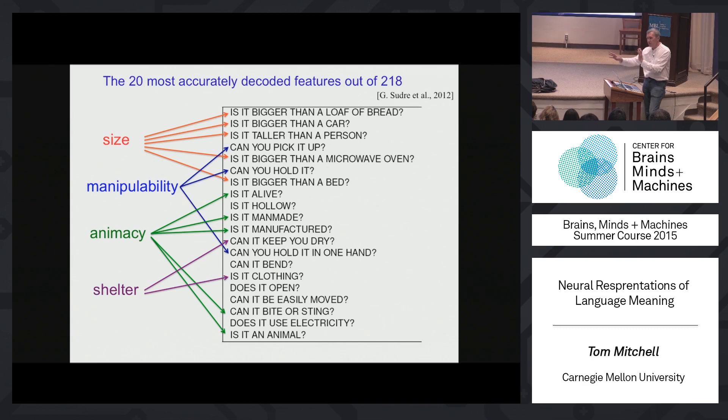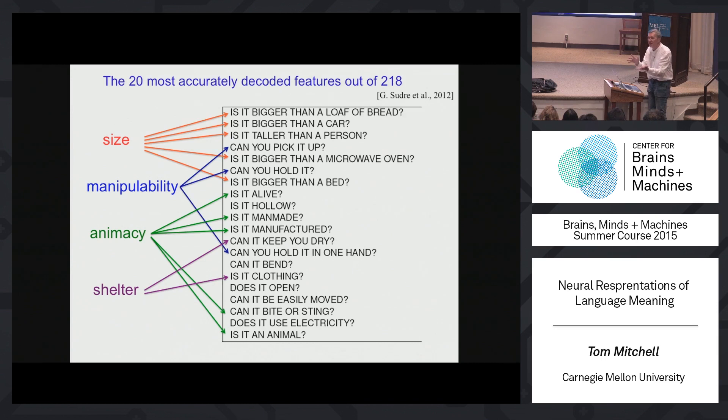If you ask me right now what's my best guess of what are the semantic primitives out of which the neural codes are built, I'd say I don't really know, but features like size, manipulability, animacy, shelter, and edibility keep recurring in what we're seeing, and they have their own spatial regions where the codes seem to live.